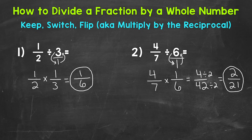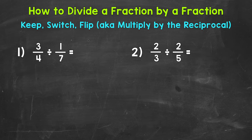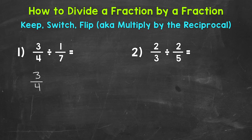And that's how we divide a fraction by a whole number. Lastly, we have fractions divided by fractions. Here are our two examples. Let's jump into number one, where we have three fourths divided by one seventh. We are seeing how many one sevenths we can make out of three fourths. Let's start by rewriting this problem using keep, switch, flip. We always keep the first fraction, so we keep three fourths as is.